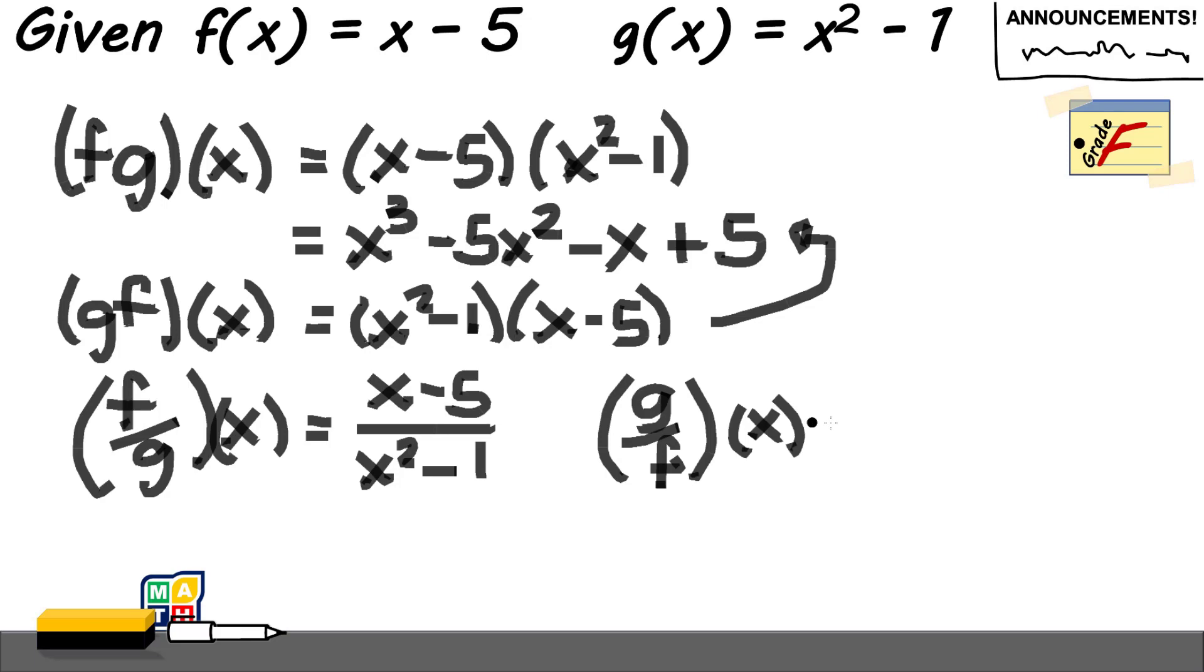It's because if you have this, you will be writing first as your numerator the g of x over your denominator f of x, which is x minus 5. And division has no commutativity. It's only multiplication.